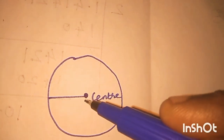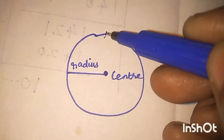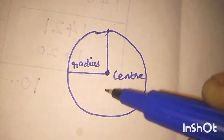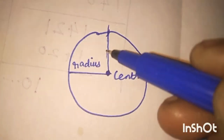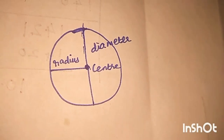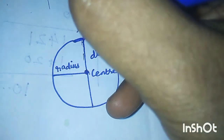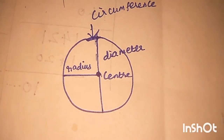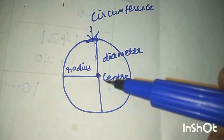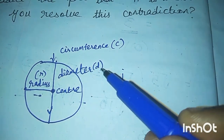Let's draw a circle. This is the center point. This is the radius. One time of radius — two times of radius is the diameter. So this distance is the diameter. The circumference is the distance around the circle. Circumference is C, radius is r, diameter is d.